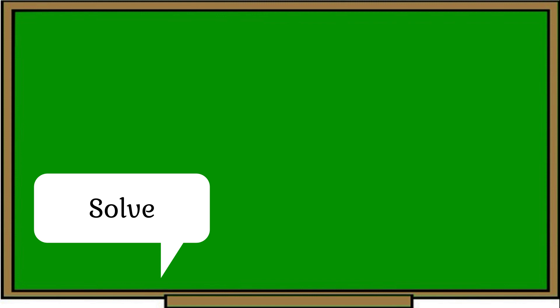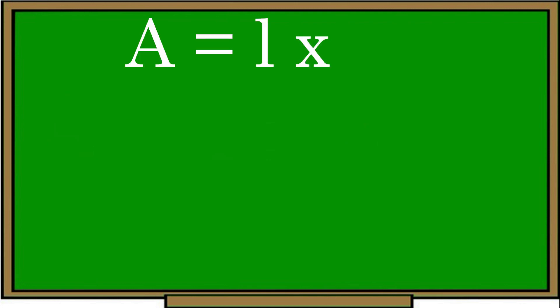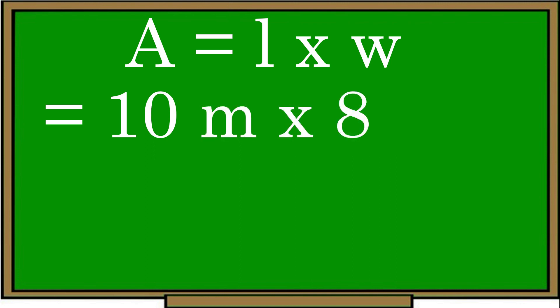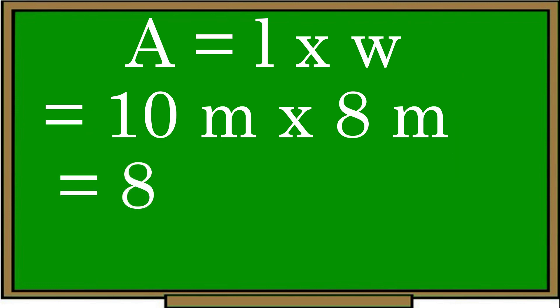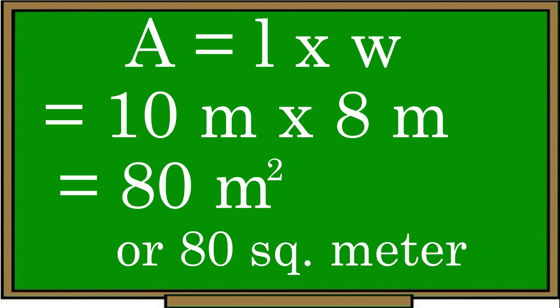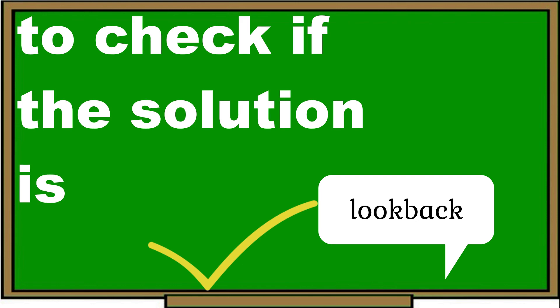The next step is to carry out the plan and solve the problem. In finding the area of a rectangle, we use the formula: area equals length times width. Let's substitute the given dimensions: the length is 10 meters and the width is 8 meters. Multiplying 10 meters times 8 meters gives 80 square meters. The area of the kiddie pool is 80 square meters. The last step is to look back and check if our solution is correct.